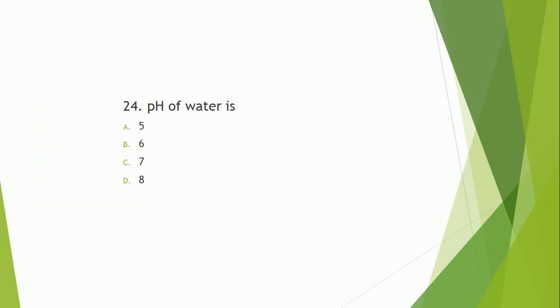Question number 24: What is the pH of water? The pH of water is 7. The correct answer is option C — water is neutral.